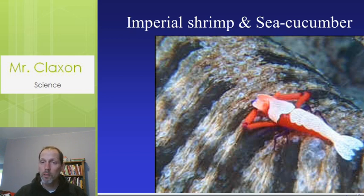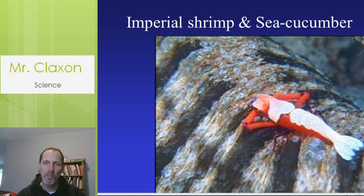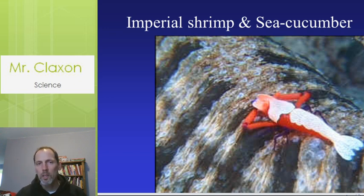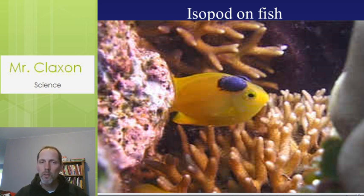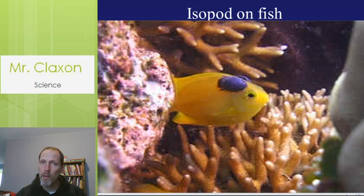Another example is the sea cucumber and the imperial shrimp. The shrimp gets carried around by the sea cucumber and it doesn't hurt the sea cucumber — that's commensalism. A third example is this isopod connected to a fish. The main thing to consider is whether it's harming the animal it's attached to. If it is, it's a parasite; if no harm is done, it's commensalism.